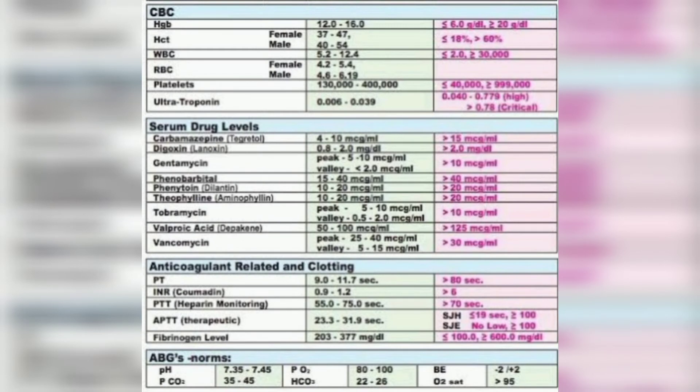For example, if it is hemoglobin, the usual normal range is 12 to 16. If there is any deranged value — if it is less than 6 or more than 20 — this comes under a critical result. Immediately, this has to be notified to the treating physician so that they can take action and prevent complications to the patient.